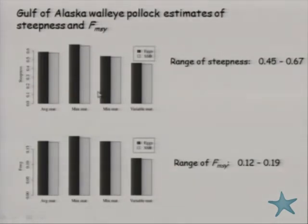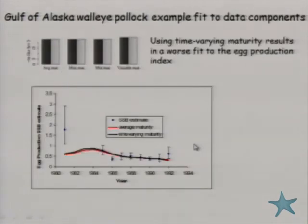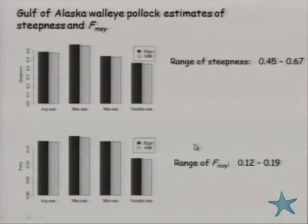There is quite a range of steepness across the eight different cases — I was surprised at how large it was. Steepness ranges from about 0.45 to 0.67, and correspondingly FMSY rates range from 0.12 to 0.19. Given that you can get really different results depending on which SRP measure you use, this strongly motivates one to find out which of these eight options is perhaps the best representation for your particular stock.